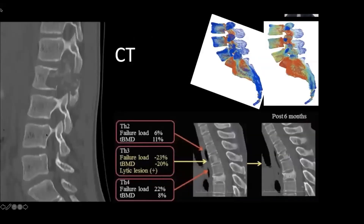CT is again depicting cortical bone very well. You have some assessment, as you can see here, of the trabecular architecture of the bone. For example, here you can see there's this infiltrative lesion. Just for orientation — you have your vertebral bodies, your pedicles, your posterior elements including your lamina and the pars articularis going down here, depending on the orientation of the CT.